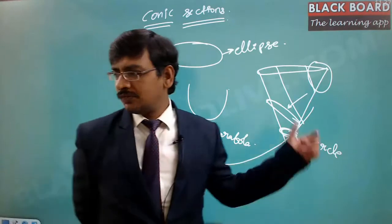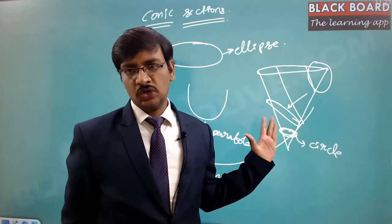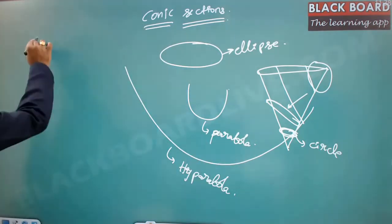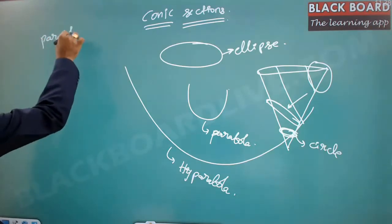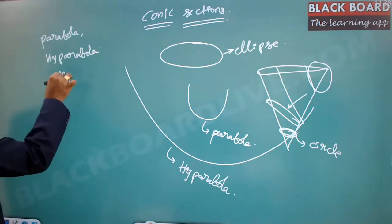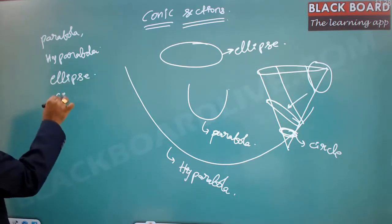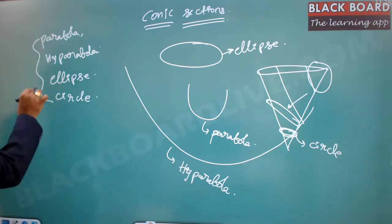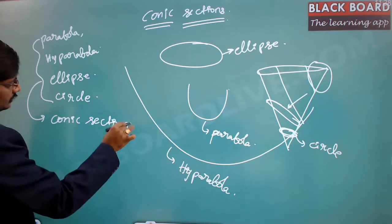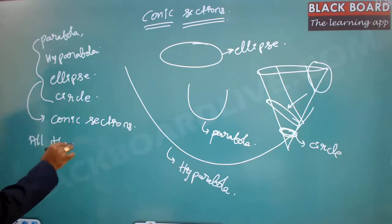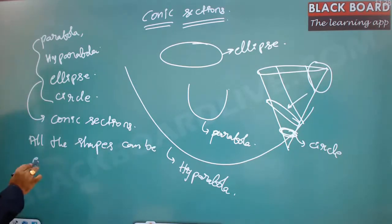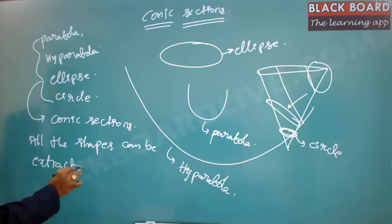So out of one cone, if you cut at different locations you are going to get different shapes — the hyperbola, the ellipse, and the circle. All these shapes are called conic sections because all of them can be extracted from a cone.